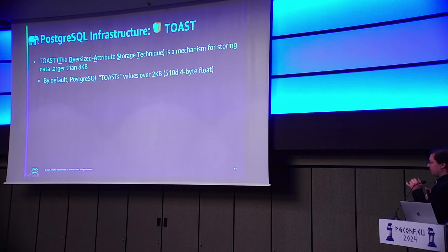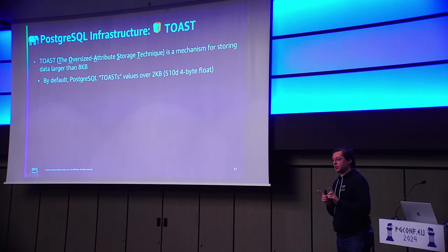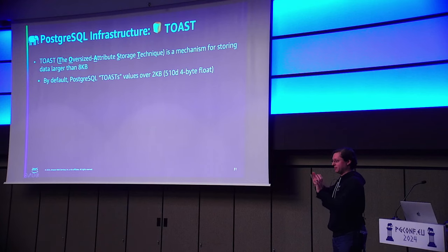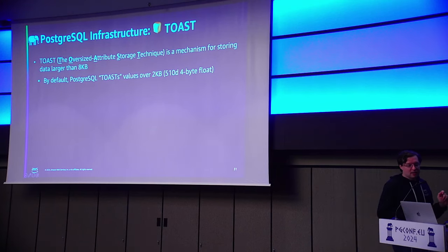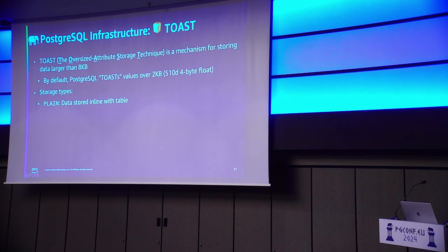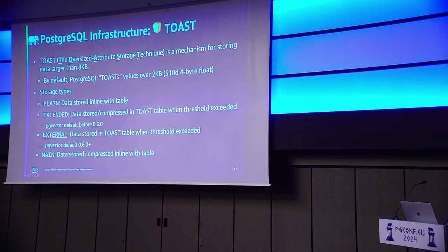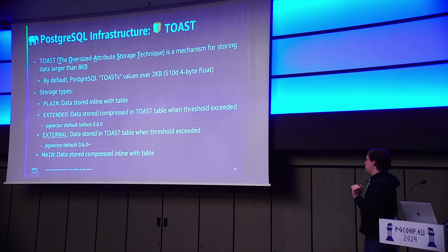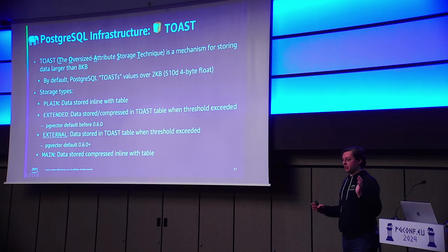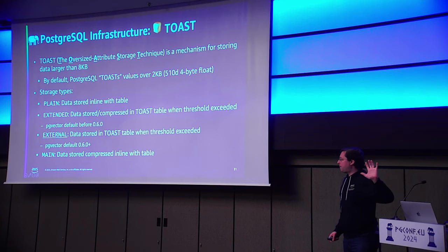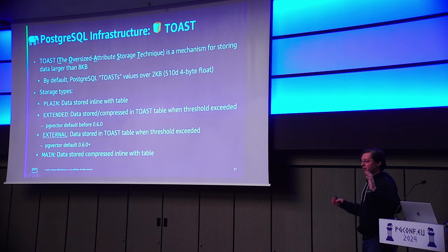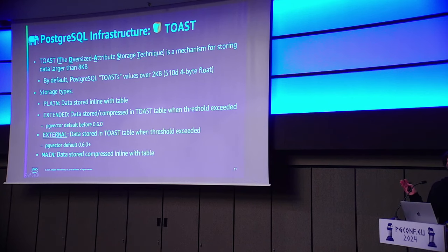Toast is very interesting with vector data though, because the idea with Toast is that you can store information that goes beyond the page. I said you can't do that for index pages, but we'll put that aside for a second. For regular table pages or heap pages, you're able to Toast data, but it might not work the way you think. There are four different storage types available for Toasting data. Currently, PGVector uses the external type by default — try to store data inline, but if it exceeds the Toast threshold, store it in your Toast table, but don't try to compress it, because we can't compress these random four-byte floating point values.